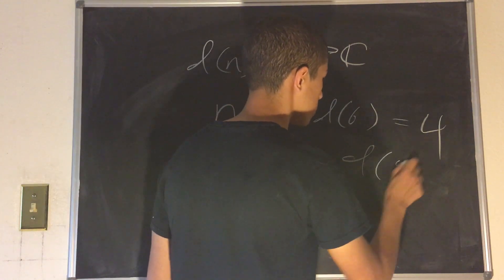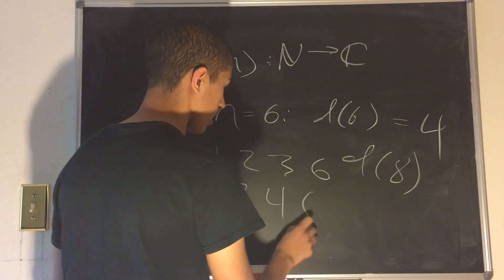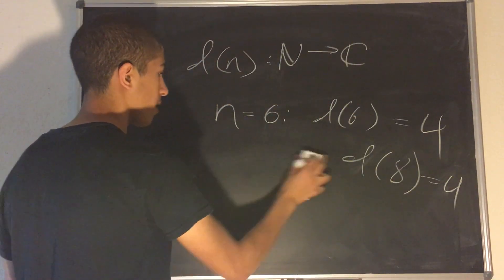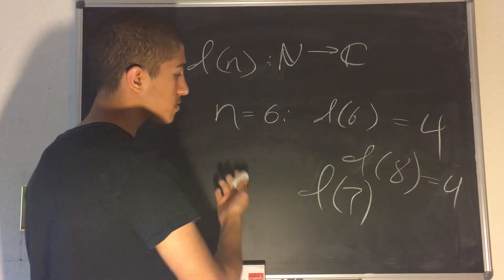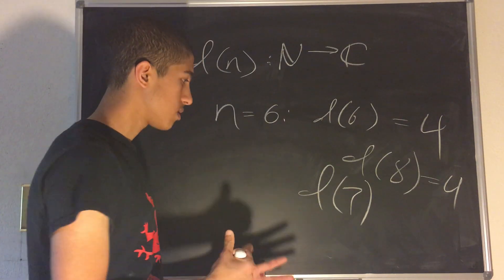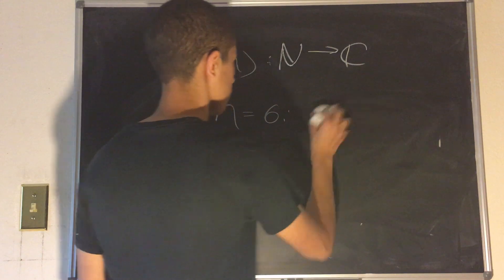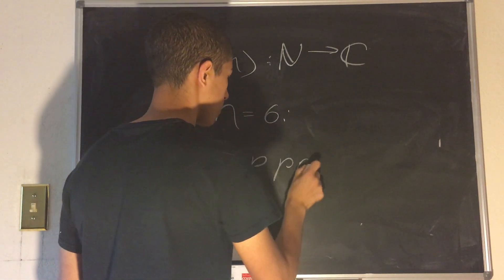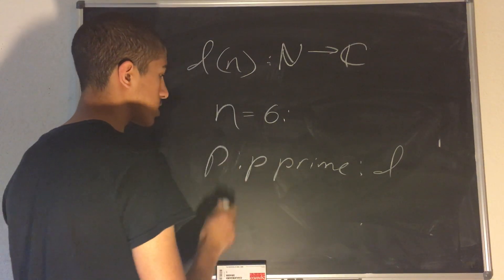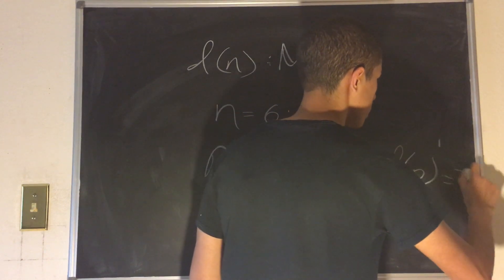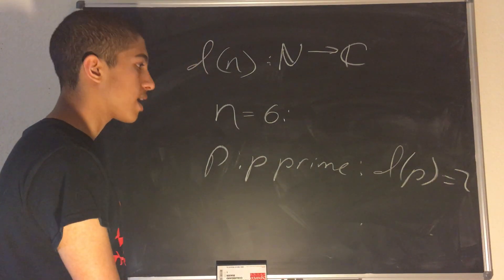d(8): the divisors of 8 are 1, 2, 4, and 8 — that's also four. Now what if we input a prime number? d(7): 7 is a prime number, so how many divisors does 7 have? Seven's divisors are only 1 and 7, so this is equal to 2. So for p such that p is prime, d(p) is always equal to 2. And d(1) is simply 1, because 1 only has itself as a divisor.